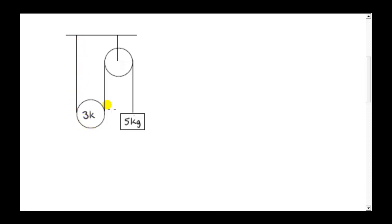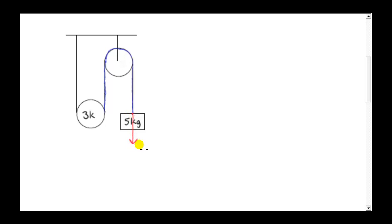Consider a string attached by one single string to a 5 kilogram mass. We assume that the mass of this string is essentially zero. We will start by looking at the forces on this section of string. Let's suppose that the force on this end of the string due to the 5 kilogram mass has magnitude T, that's vertically down.